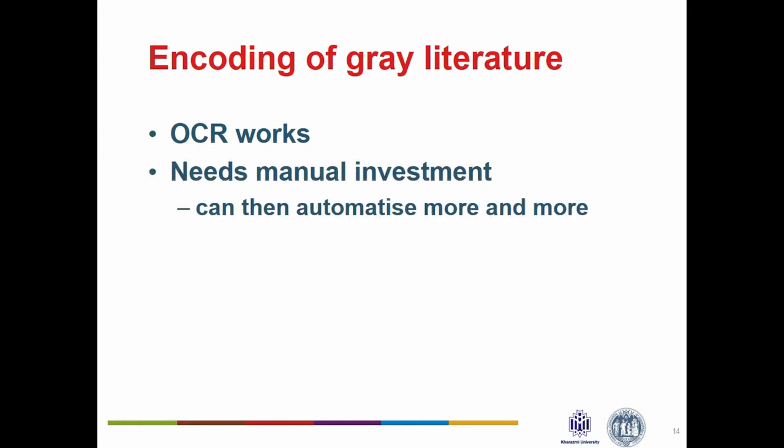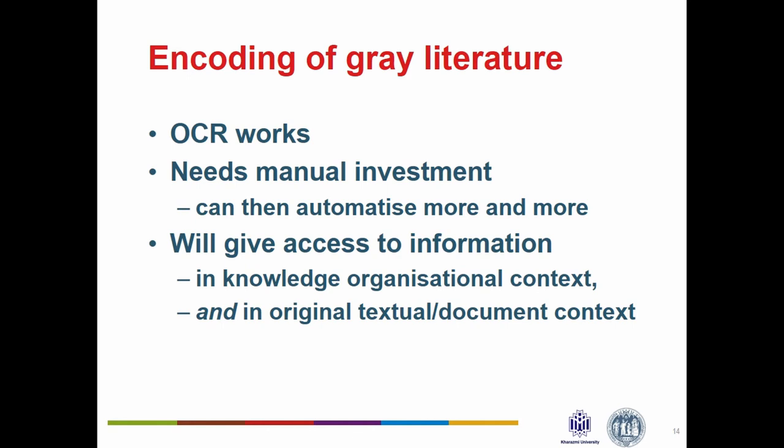OCR works now, but we need a lot of manual investment in extracting the concepts. We can automatize more and more, and that might make this process economically feasible. It's very hard to do all of this manually, and reasonably boring. But we have to start manually to get somewhere — we have to understand what we do in manual processes before we can automatize them. It will give access to information in the context of the graph database, the CRM model, the ontology — and in the context of the original textual document. The point is to link those two contexts to get scholarly reproducibility.